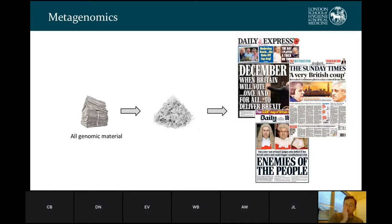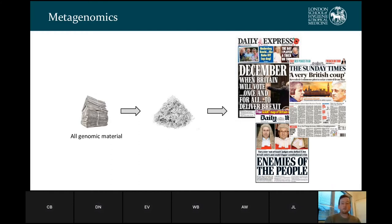A good analogy for metagenomics: if your genomic material is in a pile of newspapers, technically using second-generation sequencing you would have to tear up all of that information, put it through short-read sequencing, and then try to piece it together into the pathogenic bacterial genomes at the end in order to find out what's in your sample. So it's untargeted, unlike the targeted 16S.